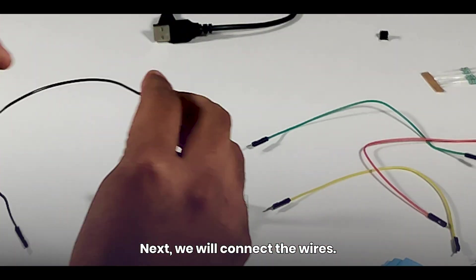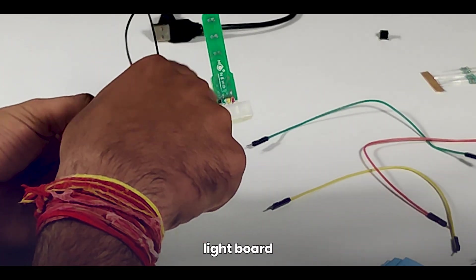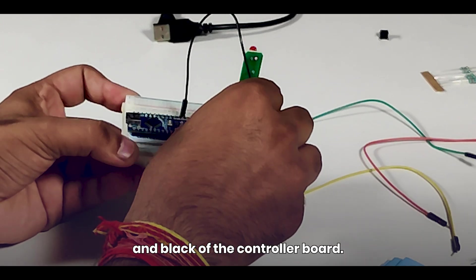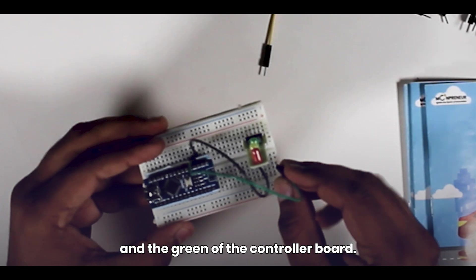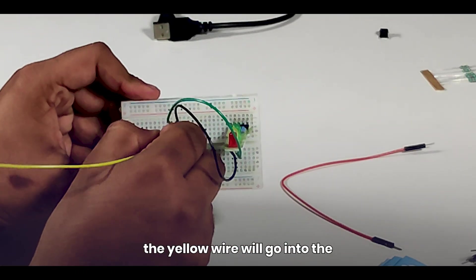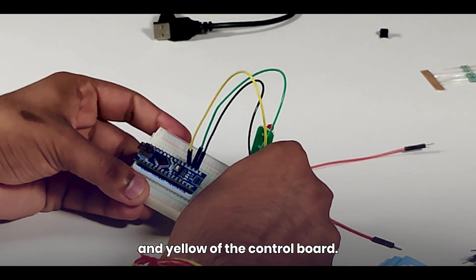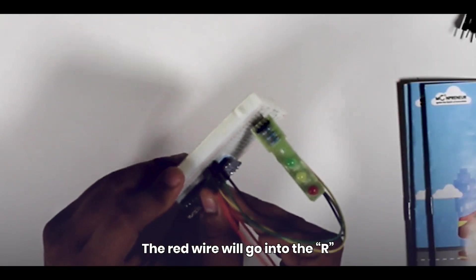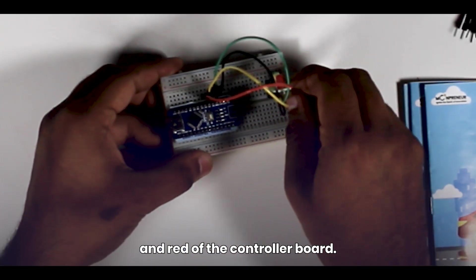Next, we will connect the wires. Black wire will go into the GND of traffic light board and black of the controller board. The green wire in the G of the traffic light board and the green of the controller board. In the same way, the yellow wire will go into the Y of the traffic light board and yellow of the control board. The red wire will go into the R of the traffic light board and red of the controller board.